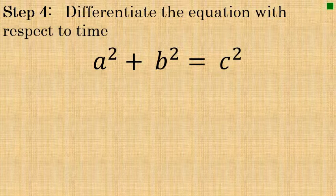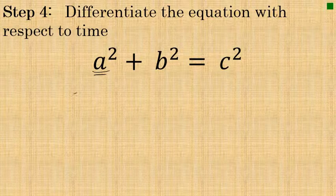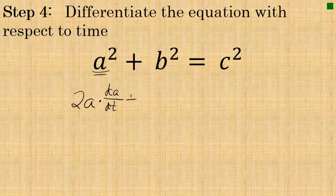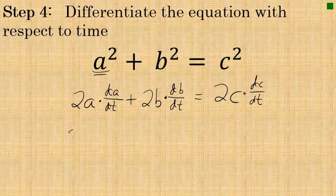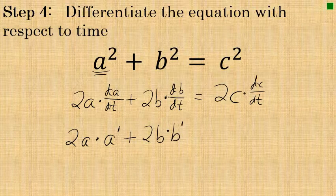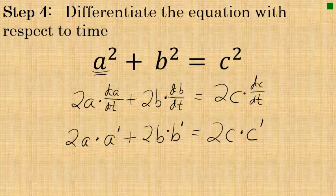Once you have all quantities related in a single equation, this is where the calculus comes in. We'll differentiate both sides of the equation with respect to time, which requires implicit differentiation. The derivative of A² is 2A times dA/dt; the derivative of B² is 2B times dB/dt; and that equals 2C times dC/dt. Abbreviating these as A prime, B prime, and C prime: 2A·A′ + 2B·B′ = 2C·C′.